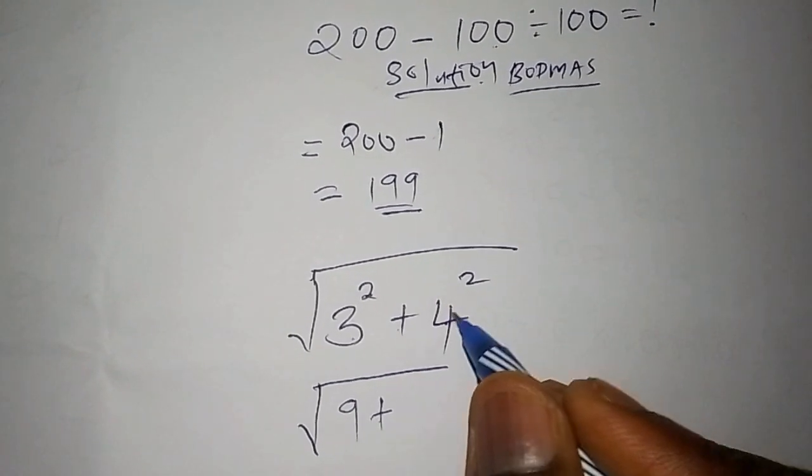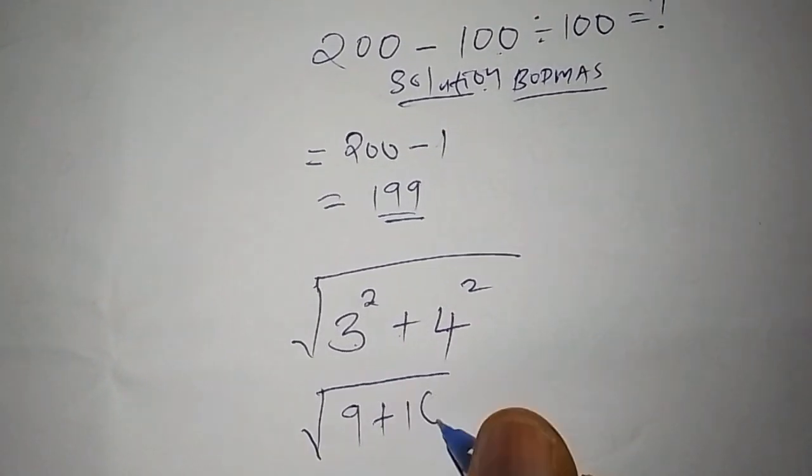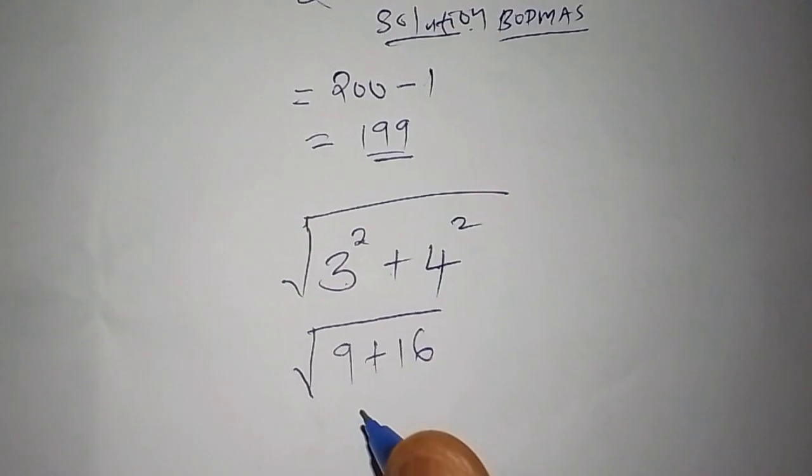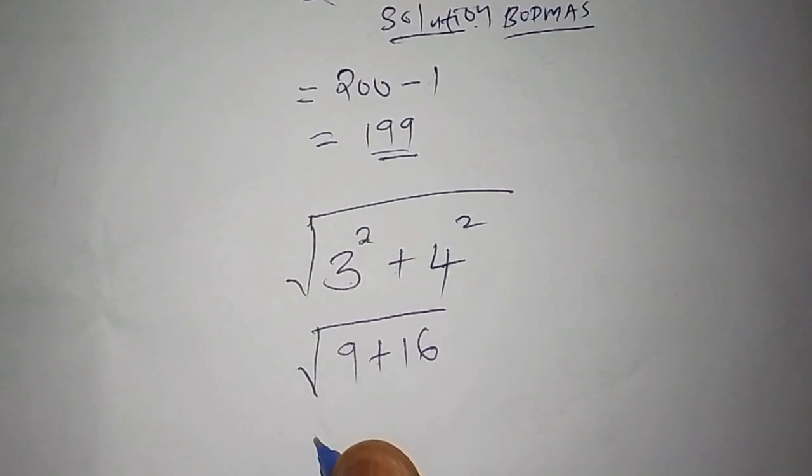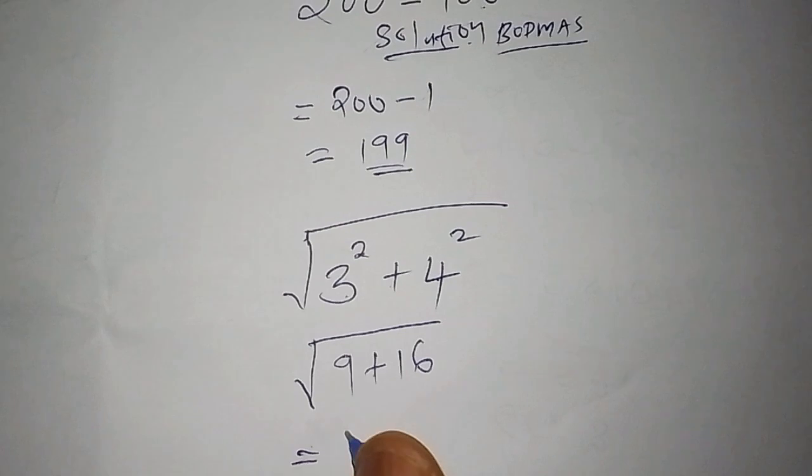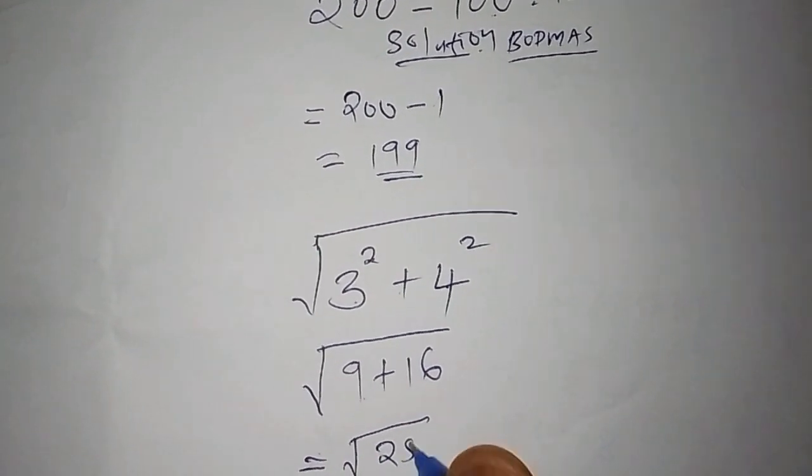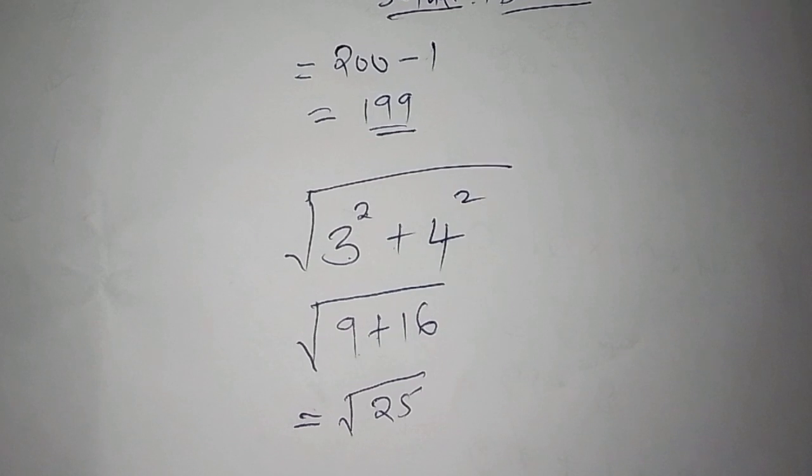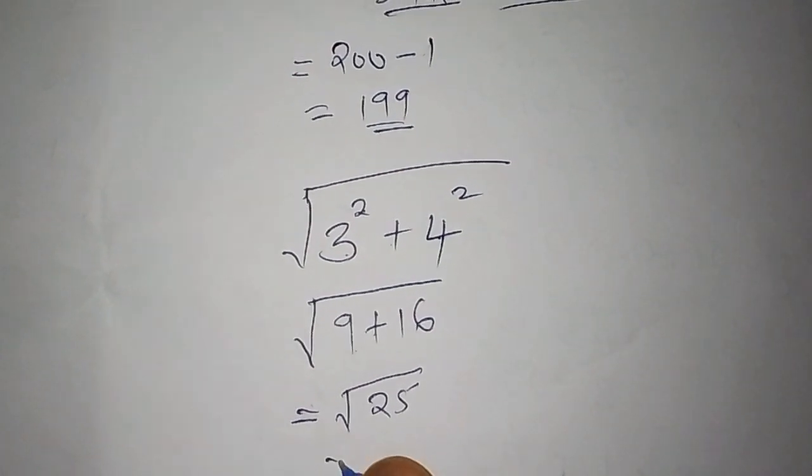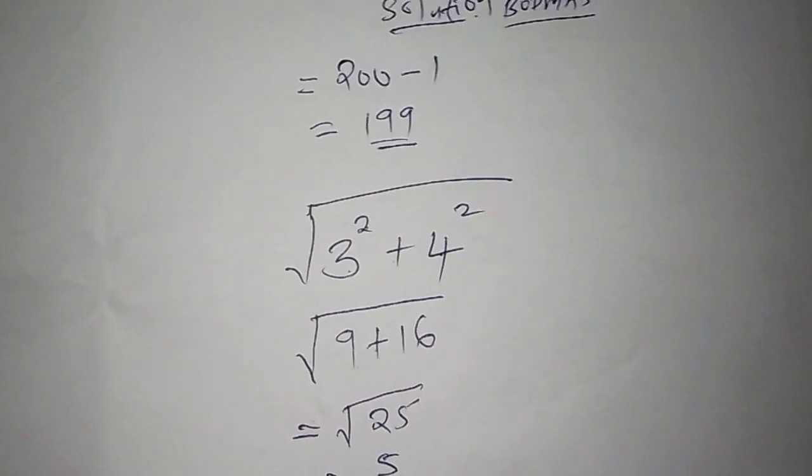So we shall put it down there: the square root of 9 plus 16, which is 25. And what's the square root of 25? The square root of 25 is 5, so the answer is 5.